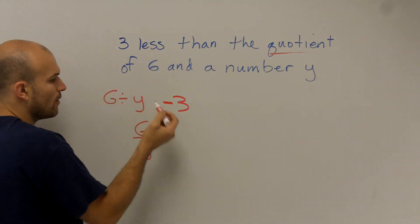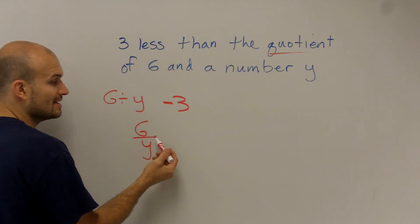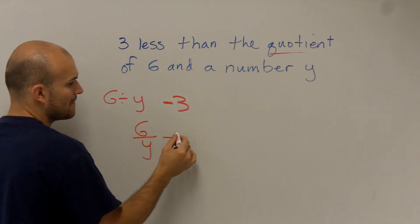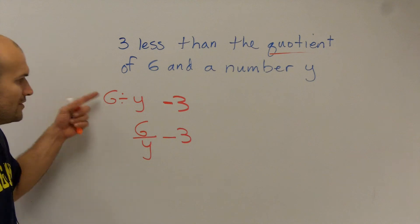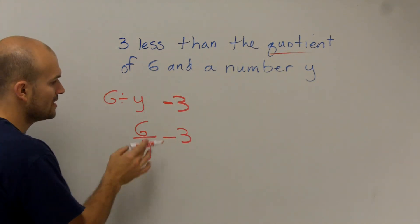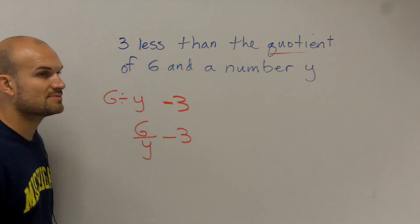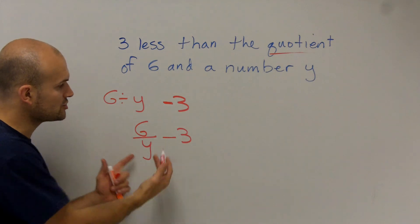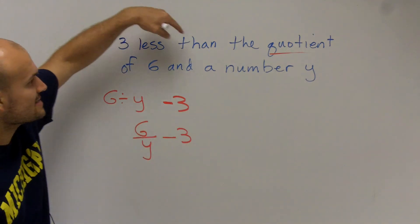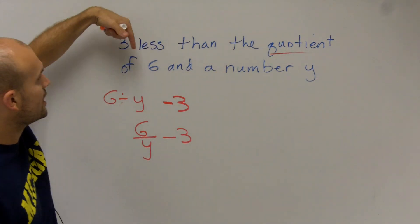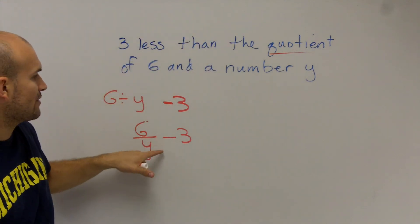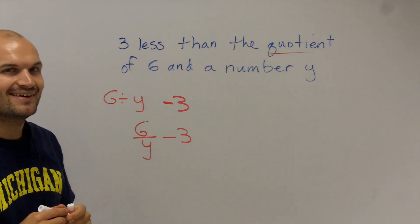because six divided by y can also be rewritten like this. Six divided by y minus three. And it's just helpful, even though these are both mathematically correct, we're going to prefer using this method so we can apply our algebraic properties. So three less than the quotient of six and a number y can be represented easily just like that. All right, good luck.